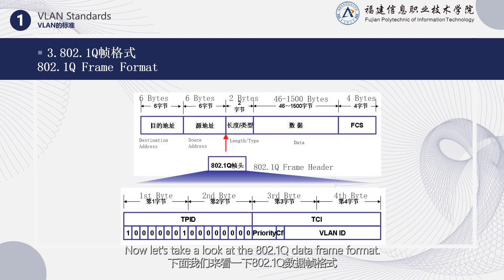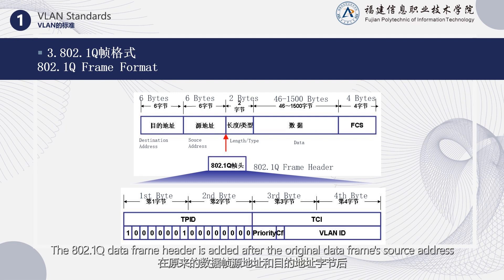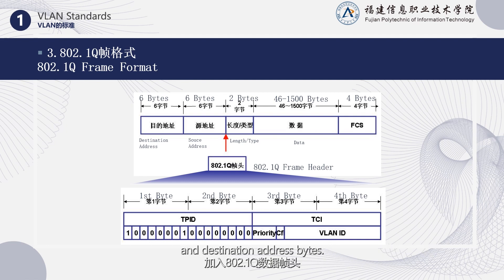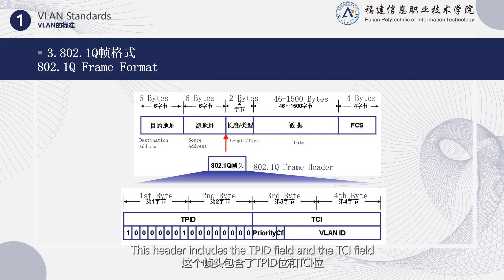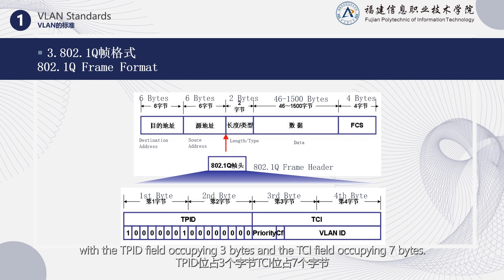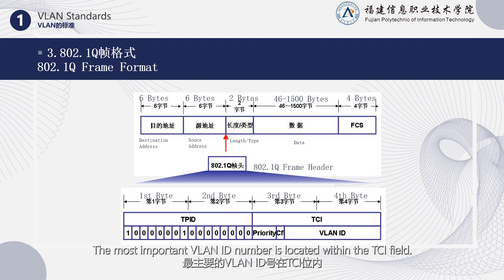Now let's take a look at the 802.1Q data frame format. The 802.1Q data frame header is added after the original data frame's source address and destination address bytes. This header includes the TPID field and the TCI field, with the TPID field occupying 3 bytes and the TCI field occupying 7 bytes. The most important VLAN ID number is located within the TCI field.